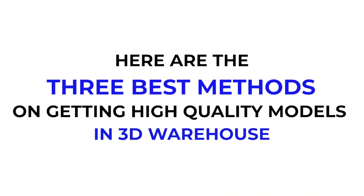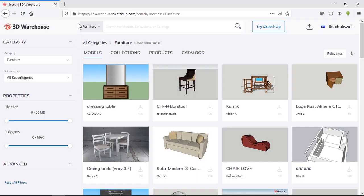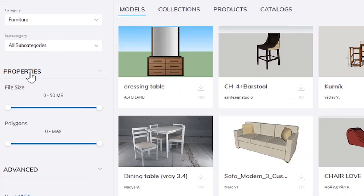Here are my three best methods for getting the best quality models on 3D Warehouse. Number one: tweaking the properties tab. In the 3D Warehouse website, on the left corner, you'll see a properties tab.